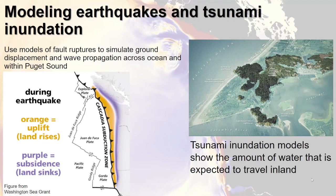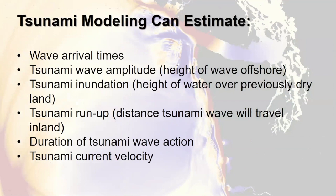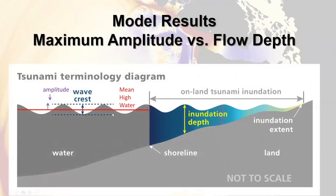This image shows the Cape Disappointment–Okawo area along the southern end of the Long Beach Peninsula, overlaying what the tsunami inundation would look like on today's topography. Tsunami modeling can help us estimate wave arrival times, tsunami wave amplitude — the height of the wave offshore — tsunami inundation depth — the height of the water over previously dry land — tsunami run-up which is the distance the tsunami wave will travel inland, the duration of tsunami wave action, and tsunami current velocity.